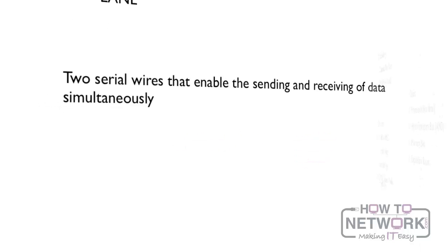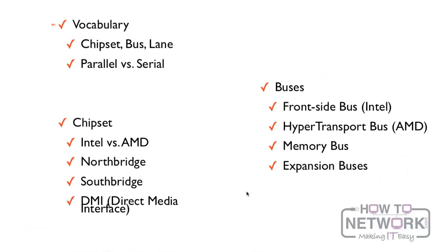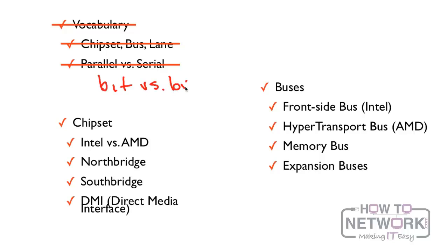So we've now covered some vocabulary: what a chipset was, a bus, and a lane. We also talked about parallel versus serial communication, with a bit in there about bit versus byte.